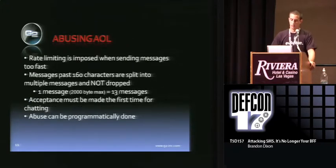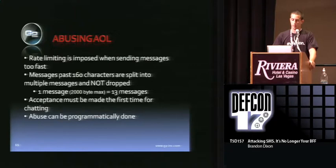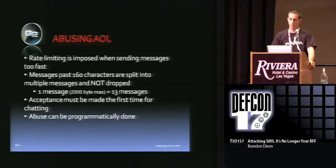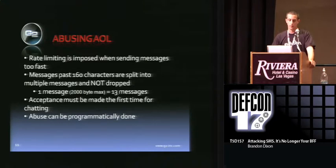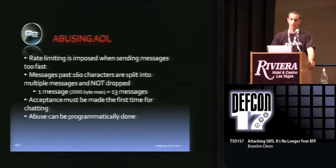Moving on to abusing AOL: rate limiting is imposed when sending messages too fast. You can go through their fat client and just keep on sending messages — eventually it's going to tell you you're sending too much too fast. That's easily handled by putting a delay in your program to slow it down, so you're still sending your messages but getting past their throttling and rate limiting. One interesting thing compared to short mail: messages past 160 characters are split into multiple messages and not dropped. One message has a 2,000-byte max, equivalent to 13 messages. So I can send one message and have it effectively turn into 13 messages on somebody's phone.